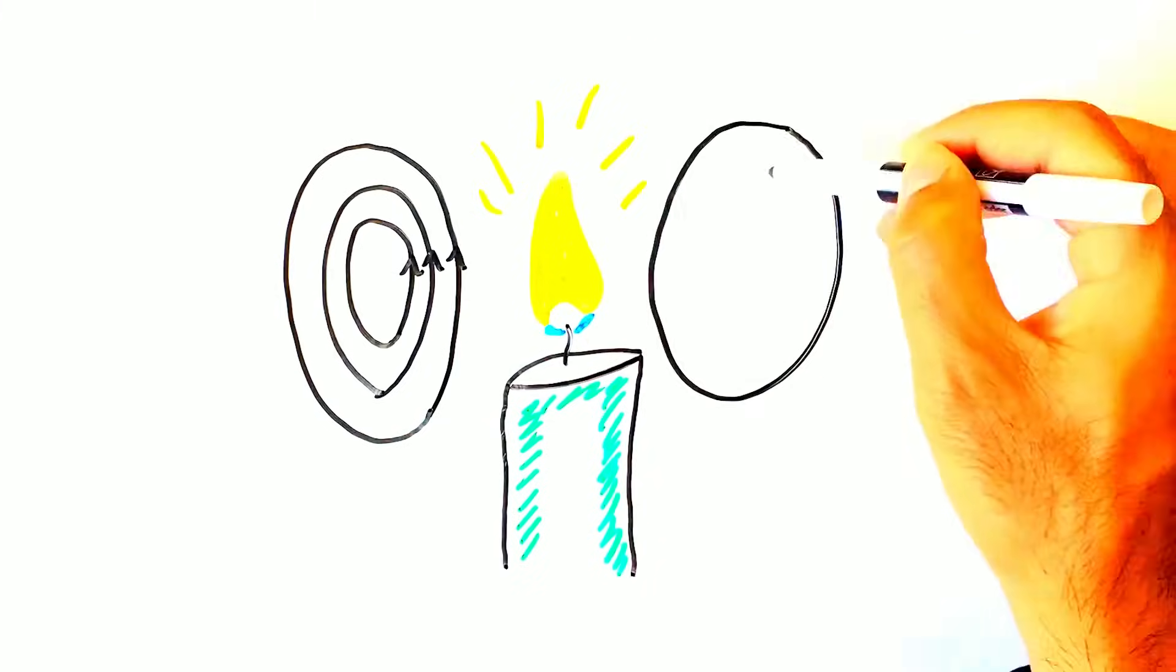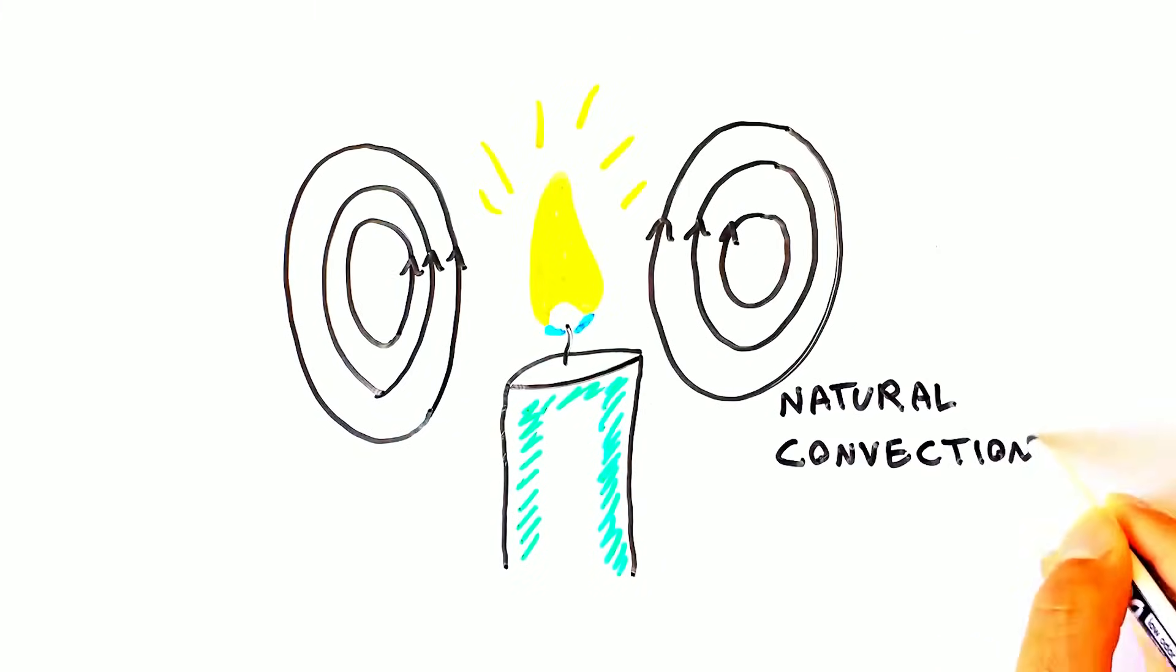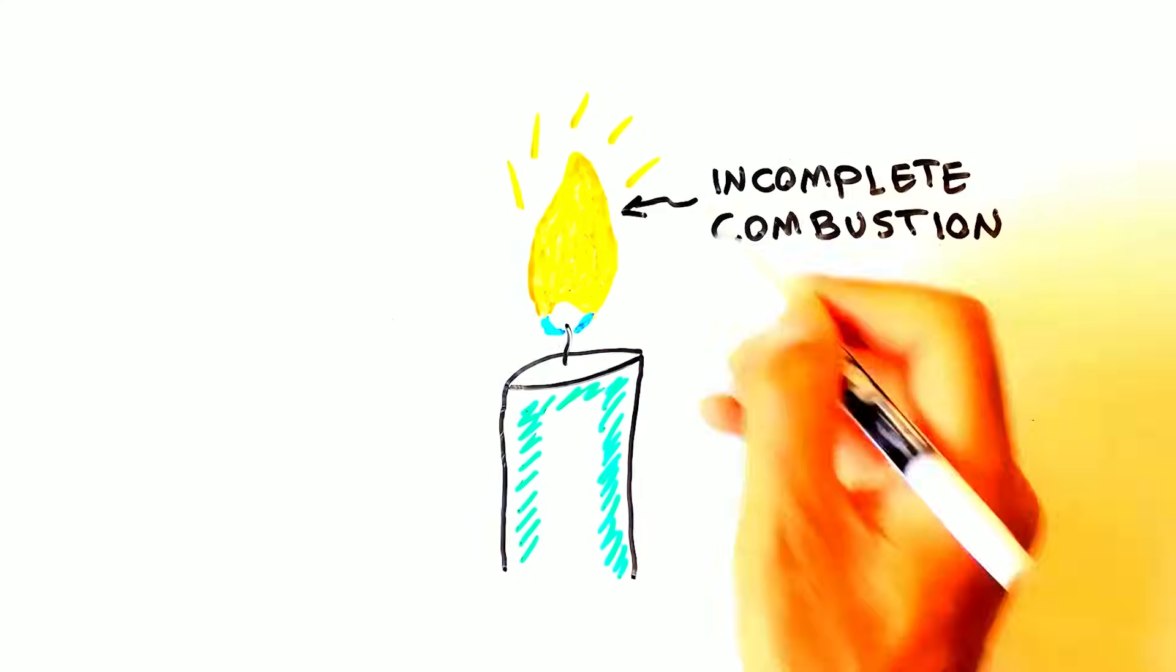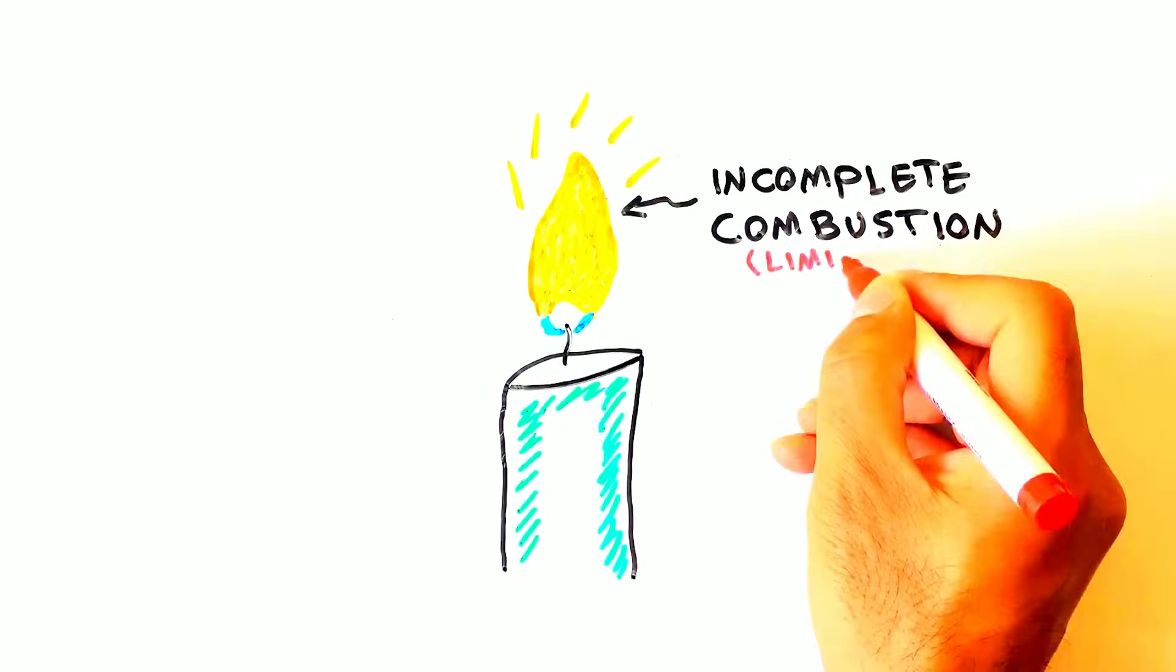This flow driven by natural convection of gases around the flame causes the flame to stretch upward and dance beautifully. The flame is mainly seen yellow because of incomplete combustion of the carbon content of the wax due to limited oxygen access.